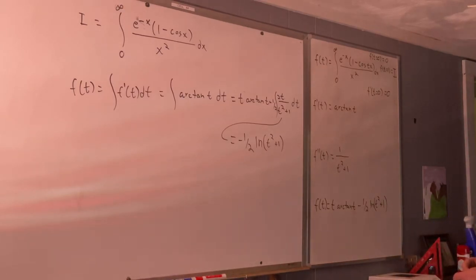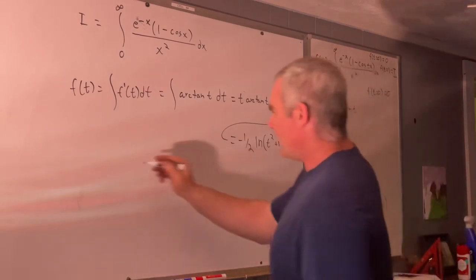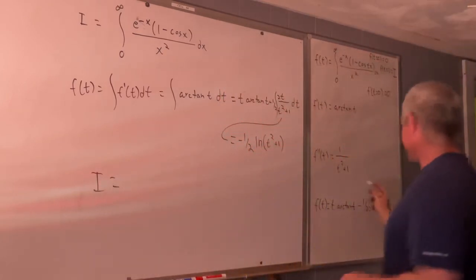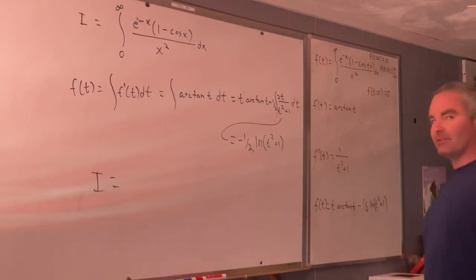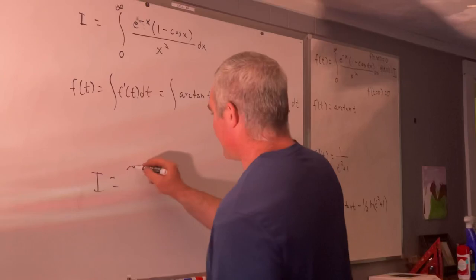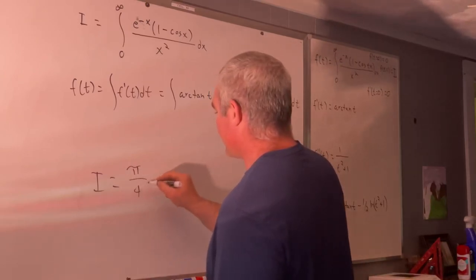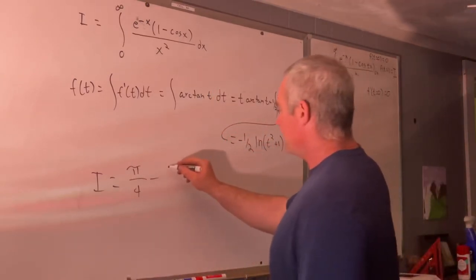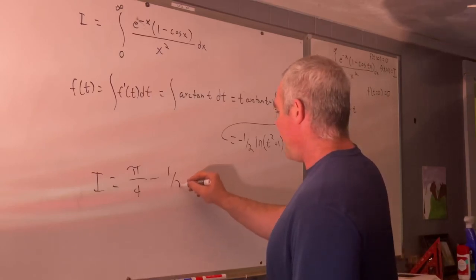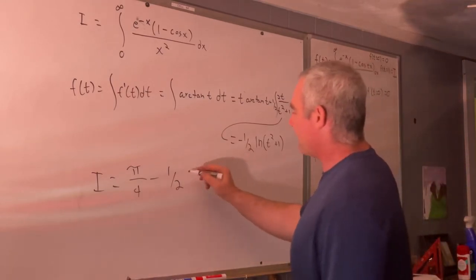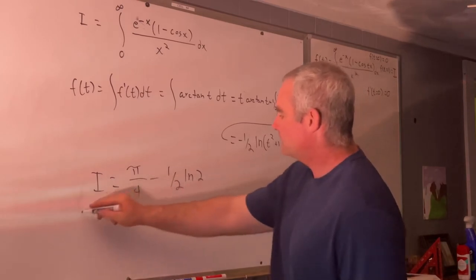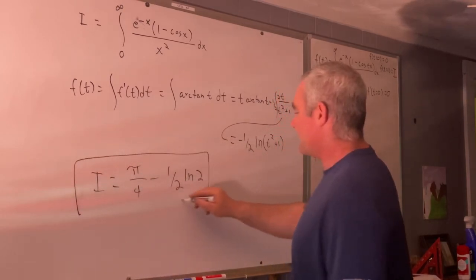Now we just plug in t equals 1 to get i. That gives 1 times arctan(1), which is pi over 4, minus one-half times the natural log of 1 squared plus 1, which is natural log 2. So i equals pi over 4 minus one-half natural log 2. And that's the answer.